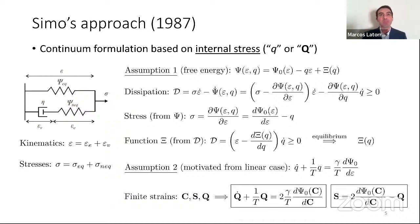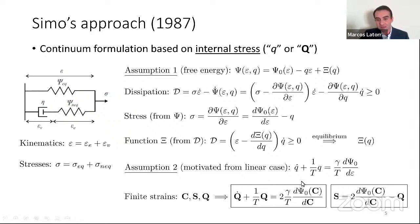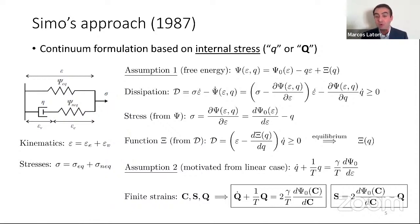The formulation is pretty similar to the one in infinitesimal strains. For finite strain, we use the right Cauchy-Green tensor C, the second Piola-Kirchhoff tensor S, and the internal stress tensor Q. We get the stresses again as initial stress minus the internal stress. The advantage of this formulation is that it can be used for nonlinear behavior and also for anisotropic energy functions. The disadvantage is that, being motivated from the linear case, it is only valid for small deviations from thermodynamic equilibrium — meaning the elastic internal strain can only be small or moderate, not large.